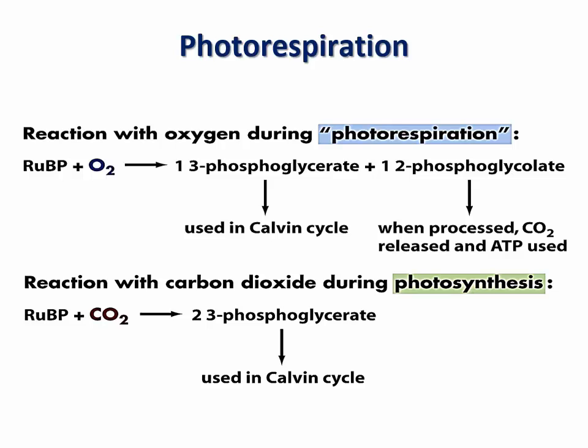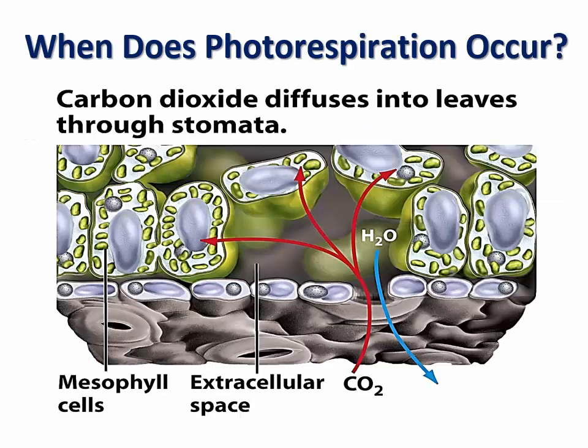Like aerobic respiration, photorespiration consumes oxygen and produces carbon dioxide. But it differs from aerobic respiration by consuming ATP as opposed to producing ATP. Carbon dioxide fixation by Rubisco is favored over photorespiration when CO2 concentration inside the cells is high and oxygen concentration is low.